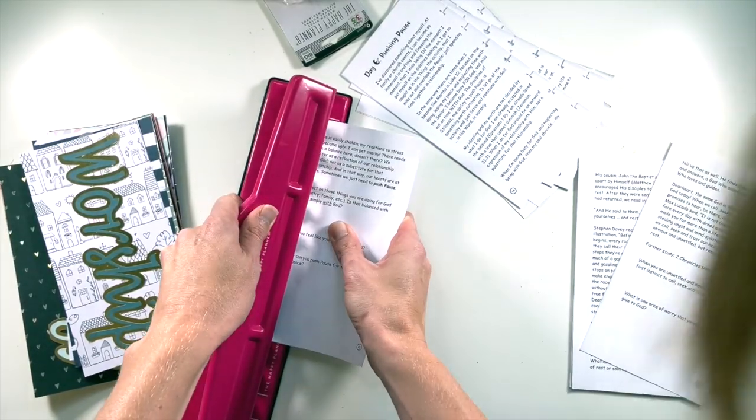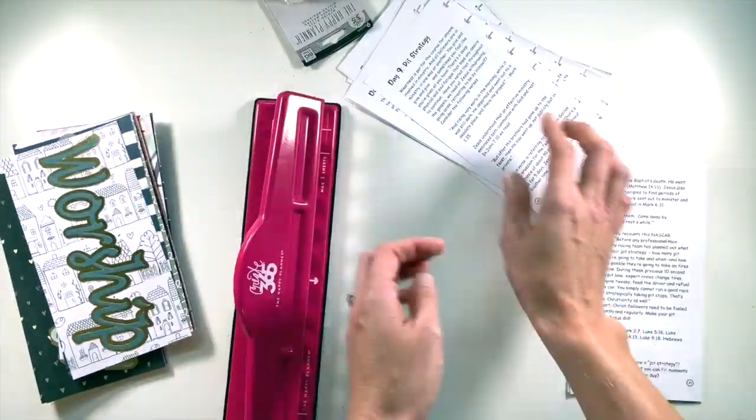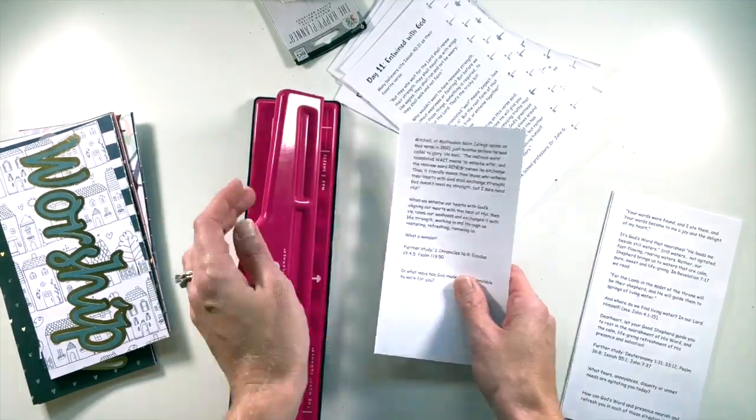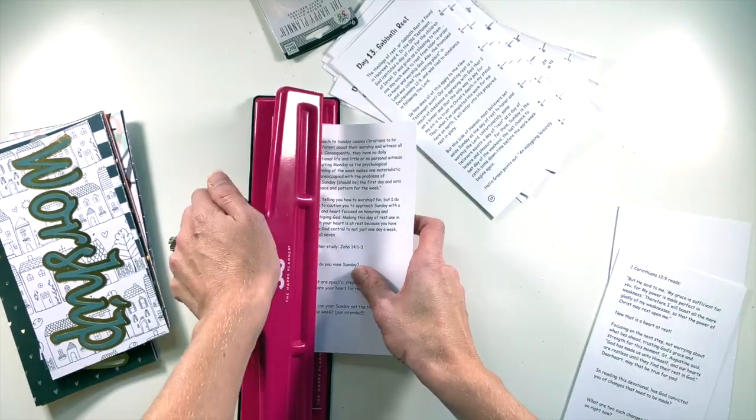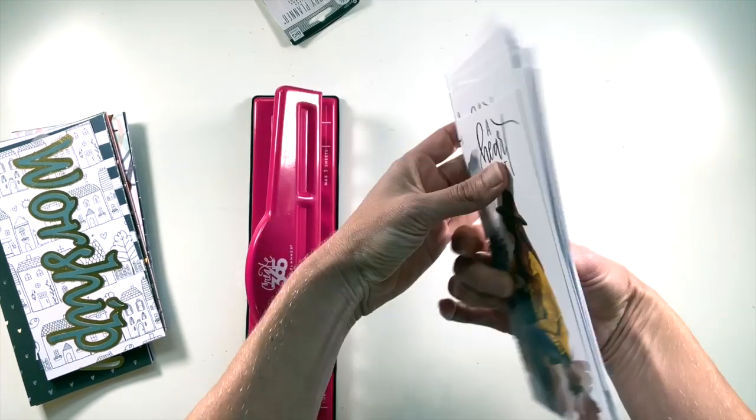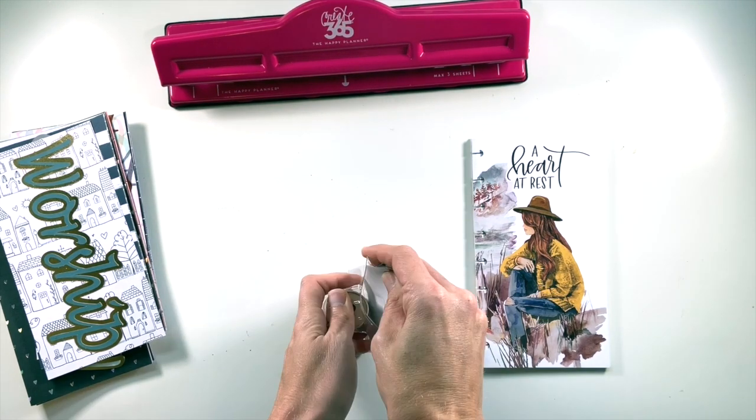For me, it was lined up with the very top line on my 365, which I believe is intended for the larger happy planners, but just something to watch out for as you're getting ready to punch. Also, something else I learned when punching: it really worked better when I just did one page at a time. It is not designed to punch out several thick papers at a time, so that's something you're going to want to watch out for as you're punching.